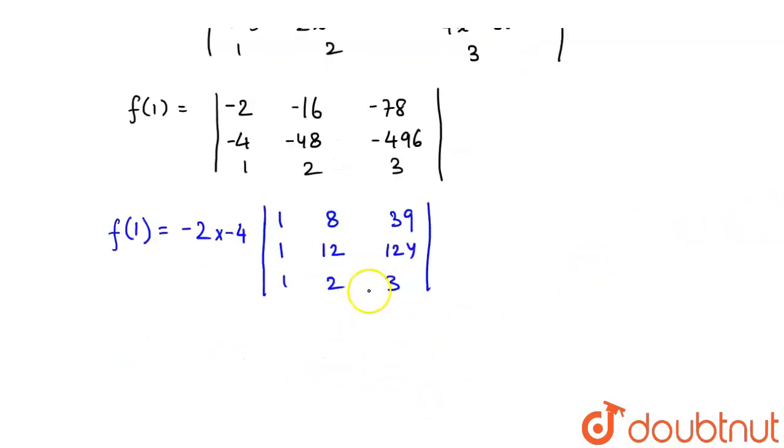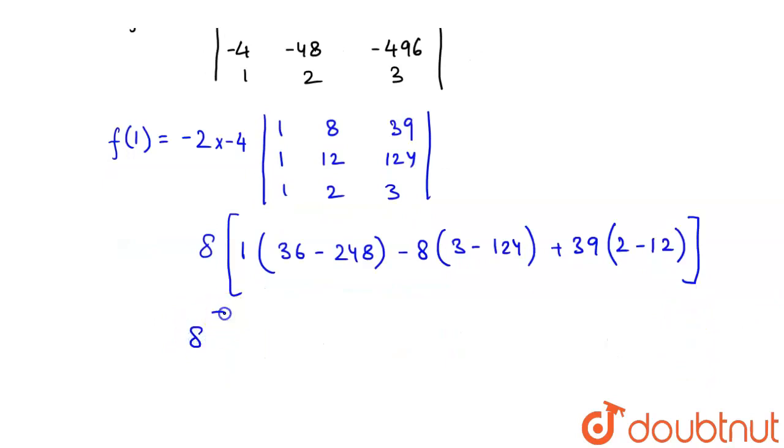So now we are going to expand it. First of all we will take common. So I will take minus 2 from row 1 common, so my f of 1 would be minus 2 times, I am left with 1, 8, and 39. And I will take minus 4 common, so this is 1, 12, and 124. And 1, 2, 3 as it is.